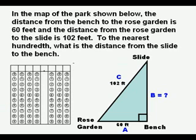In the map of the park shown below, the distance from the bench to the Rose Garden is 60 feet, and the distance from the Rose Garden to the slide is 102 feet. To the nearest hundredth, what is the distance from the slide to the bench?